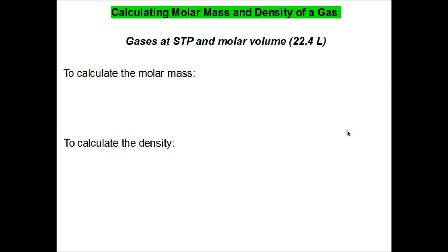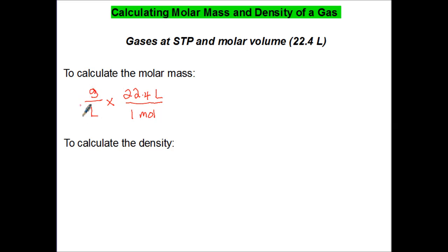We can actually use our molar volumes and molar masses to calculate the density of a gas. Gases at STP have a molar volume of 22.4 liters. To calculate the molar mass, if we start with grams per liter — that's our density — and multiply by 22.4 liters over 1 mole, the liters cancel out and we end up with units of grams per mole. Conversely, to calculate the density from the molar mass, we multiply grams per mole by 1 mole over 22.4 liters, and moles cancel, leaving grams per liter.